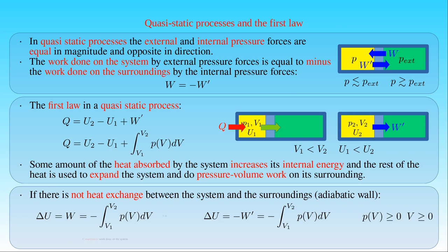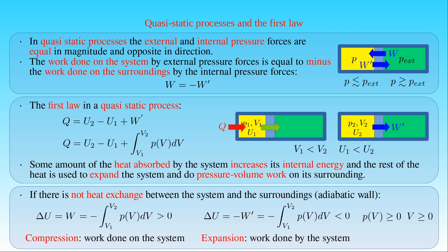If an ideal gas is compressed and its initial volume is greater than its final volume, the value of the definite integral of the pressure with respect to the volume is negative. Then the change in the internal energy of the gas is positive, as we expect since the work is done on the gas. If the ideal gas expands and its initial volume is smaller than its final volume, the value of the definite integral of the pressure with respect to the volume is positive. Then the change in the internal energy of the gas is negative, as we expect since the work is done by the gas.